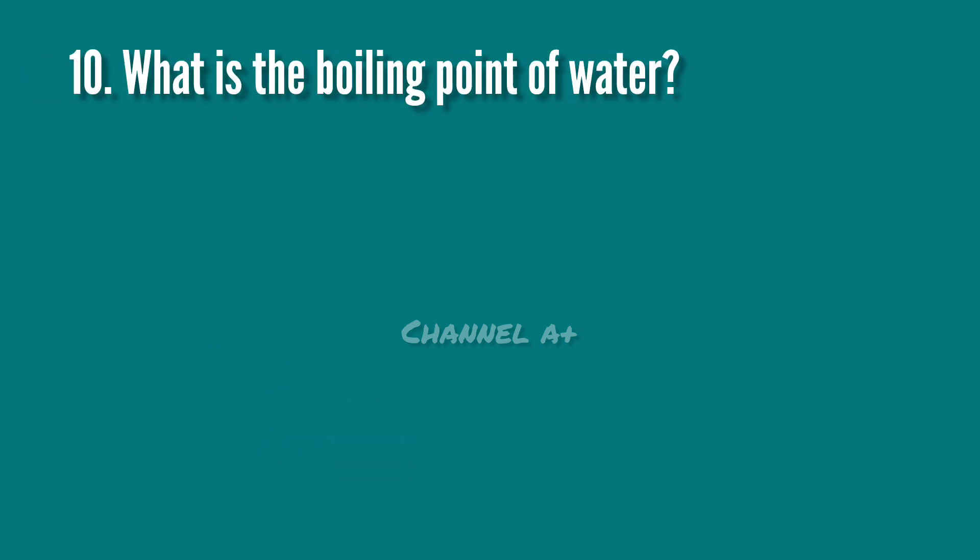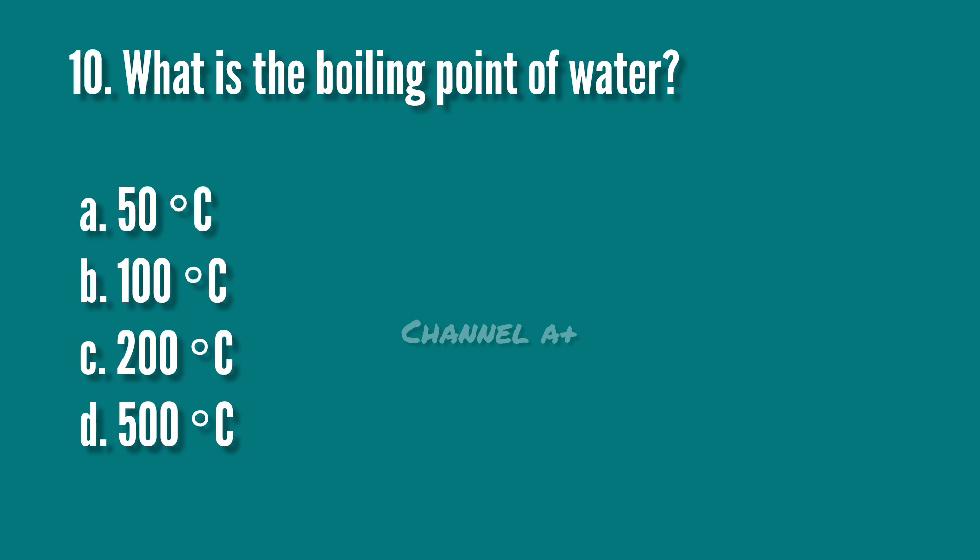What is the boiling point of water? A. 50 degrees Celsius. B. 100 degrees Celsius. C. 200 degrees Celsius. D. 500 degrees Celsius. The answer is B. 100 degrees Celsius.